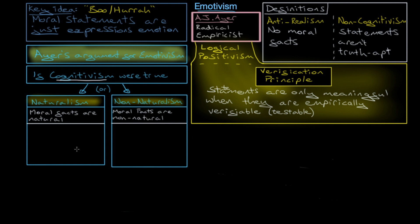But he thinks that both of these are fundamentally flawed. So, naturalism, the claim that moral facts are natural and exist in the world. Well, he would say, look at G.E. Moore's,